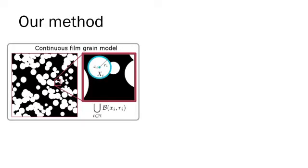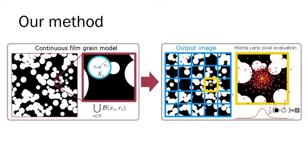First, we sample the grains from the input image. This defines our continuous film grain model. Then, the model is evaluated using a Monte Carlo simulation which generates the final output image.